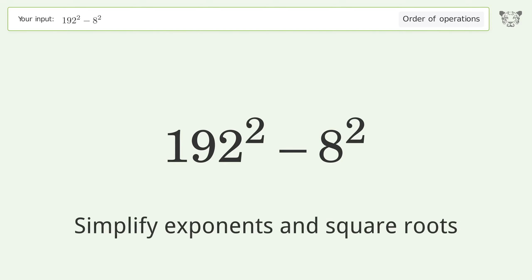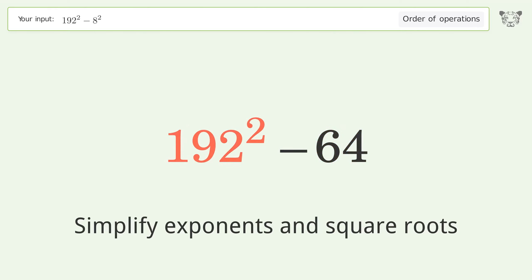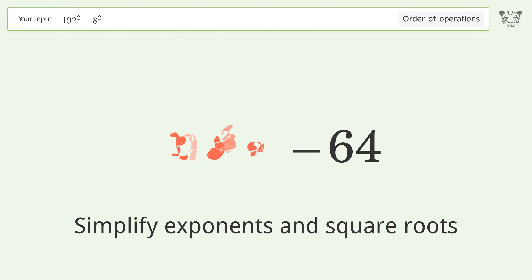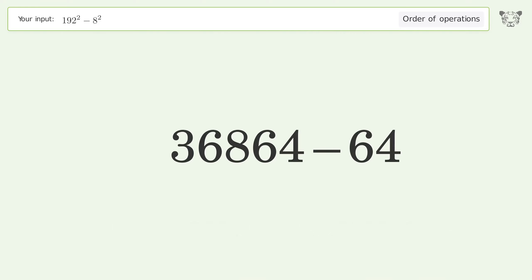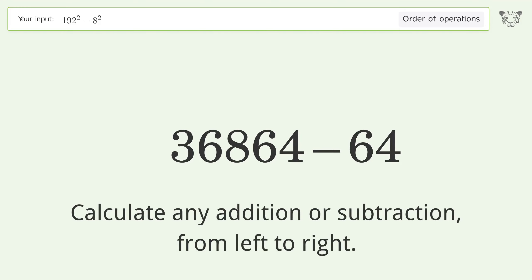Simplify exponents and square roots: 8 to the power of 2 equals 64. 192 to the power of 2 equals 36,864. Then calculate addition or subtraction from left to right: 36,864 minus 64 equals 36,800.